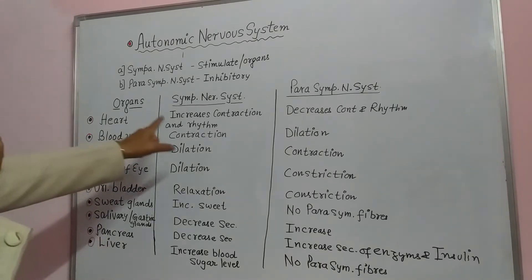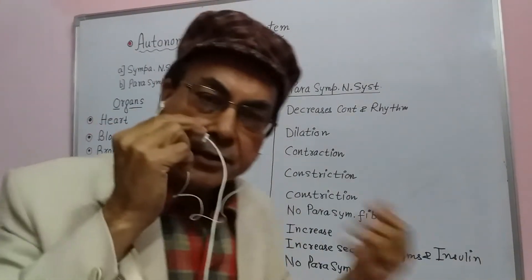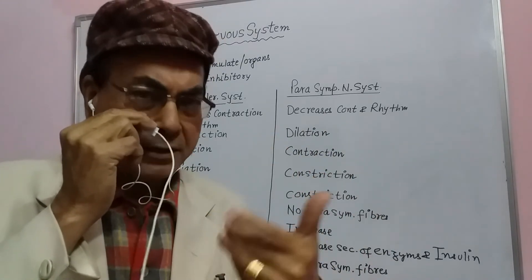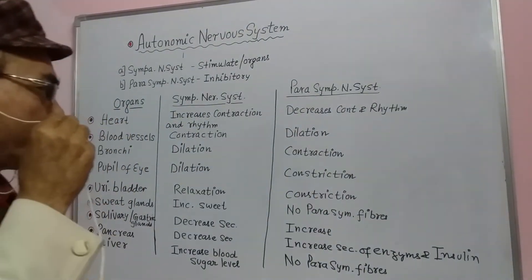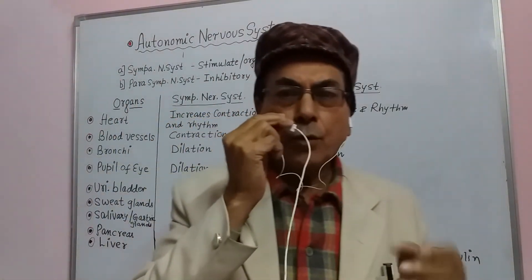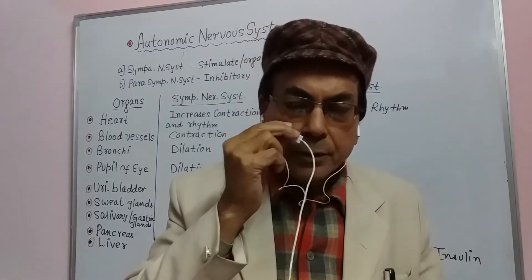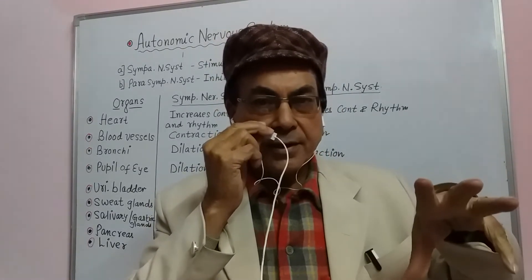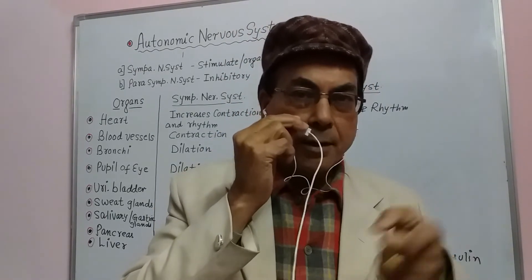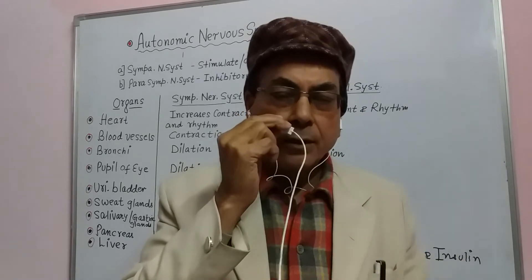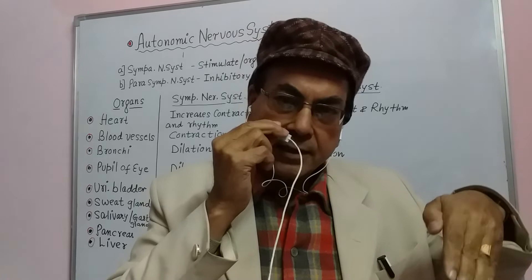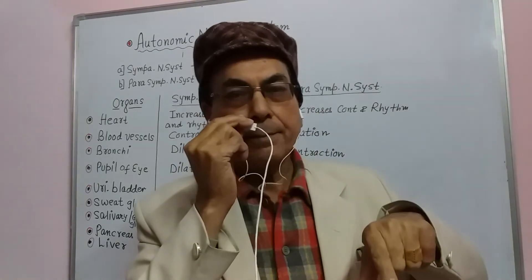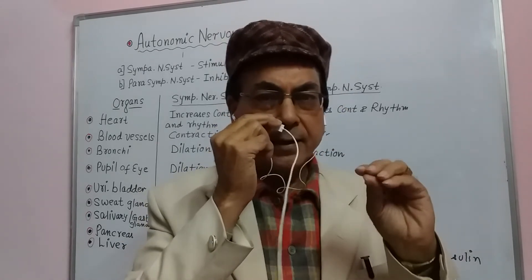For the urinary bladder, the sympathetic nervous system helps in the relaxation of the urinary bladder during micturition — the passing of urine — while the parasympathetic causes contraction. During the micturition process, relaxation and then contraction of the sphincters occur, so that once urine comes out it cannot go back. This relaxation and contraction is automatically controlled by the sympathetic and parasympathetic nervous system.